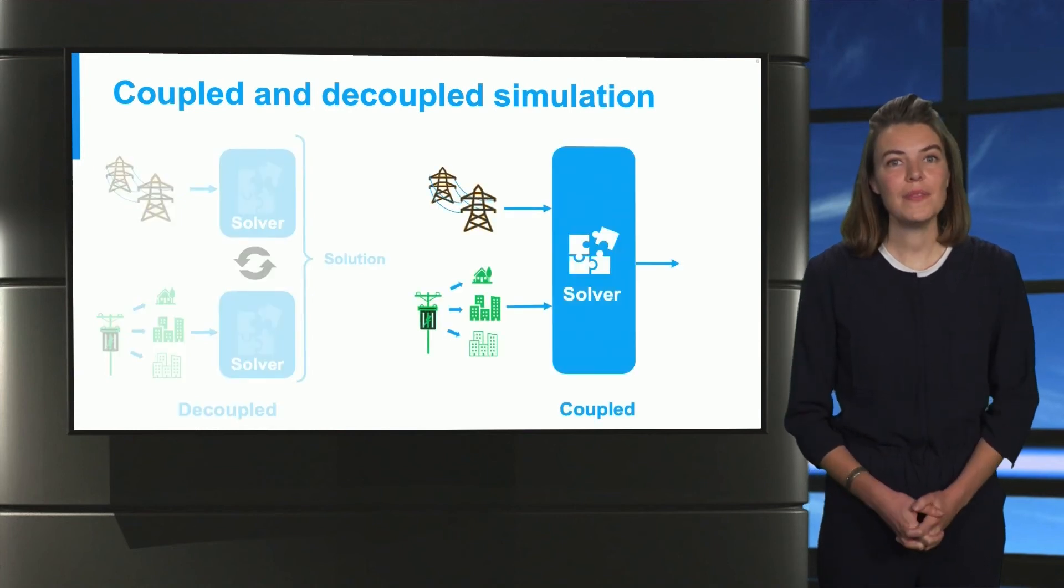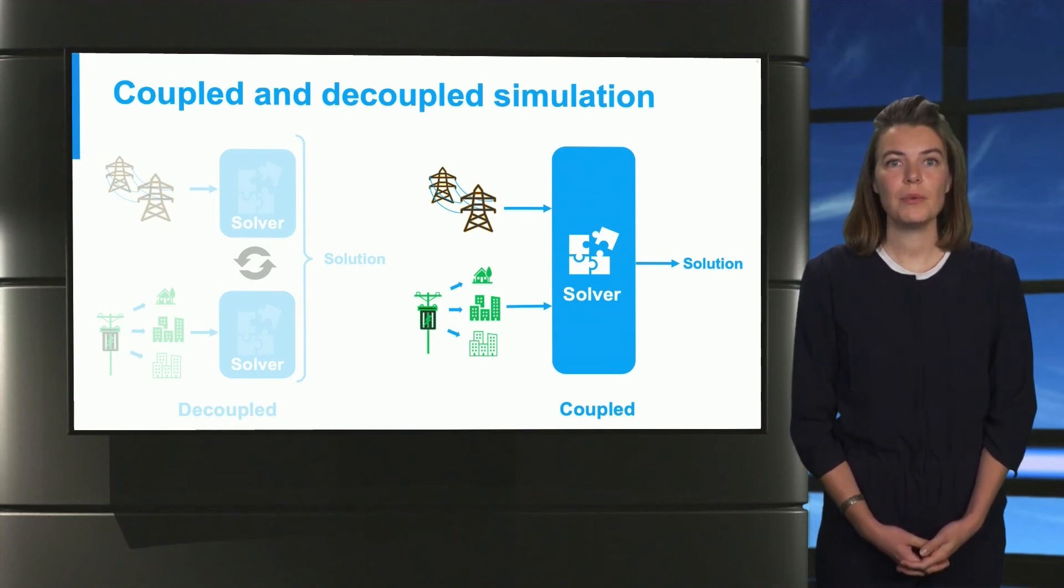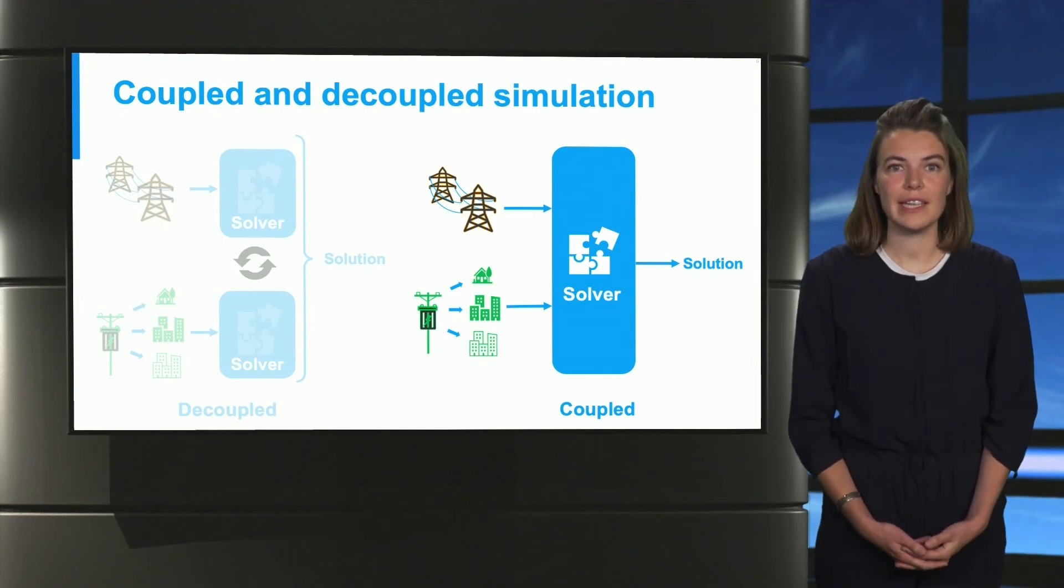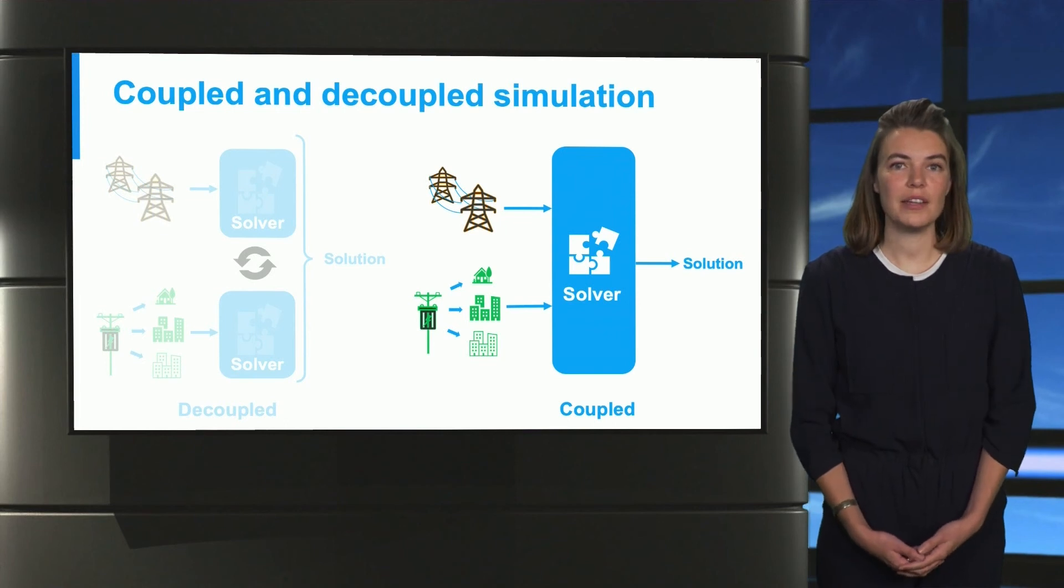The other option is the coupled solver, where simulations are done together. Here both the transmission network and the distribution network are described by their own models. Those are combined in one big problem, and then we have one common solver that tackles the problem. Hopefully the solution is the same as what is done in a decoupled solver, but the paths taken are different.